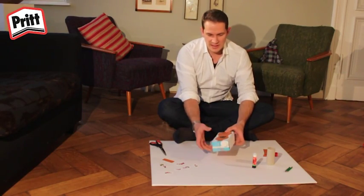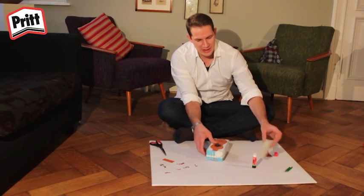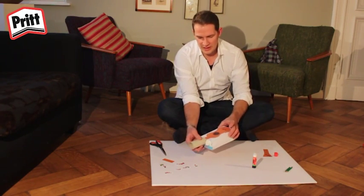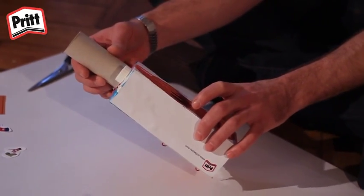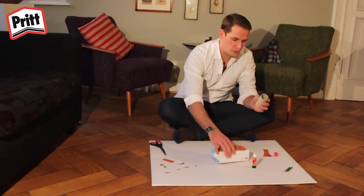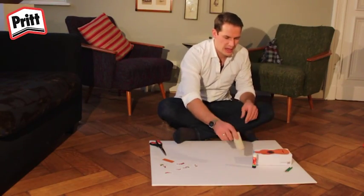Nadat je de elastiekjes op hun plaats hebt gezet, maken we de hals van de ukelele. Voor de hals hebben we twee toiletrollen, keukenpapier en een stuk karton nodig.